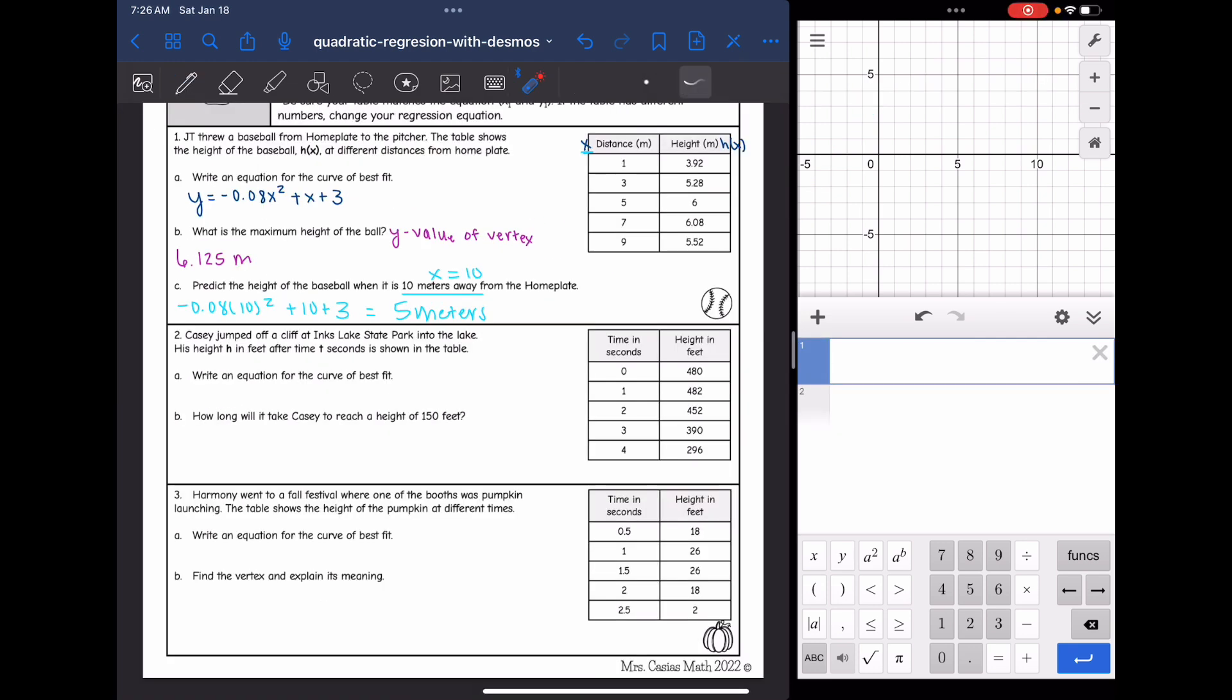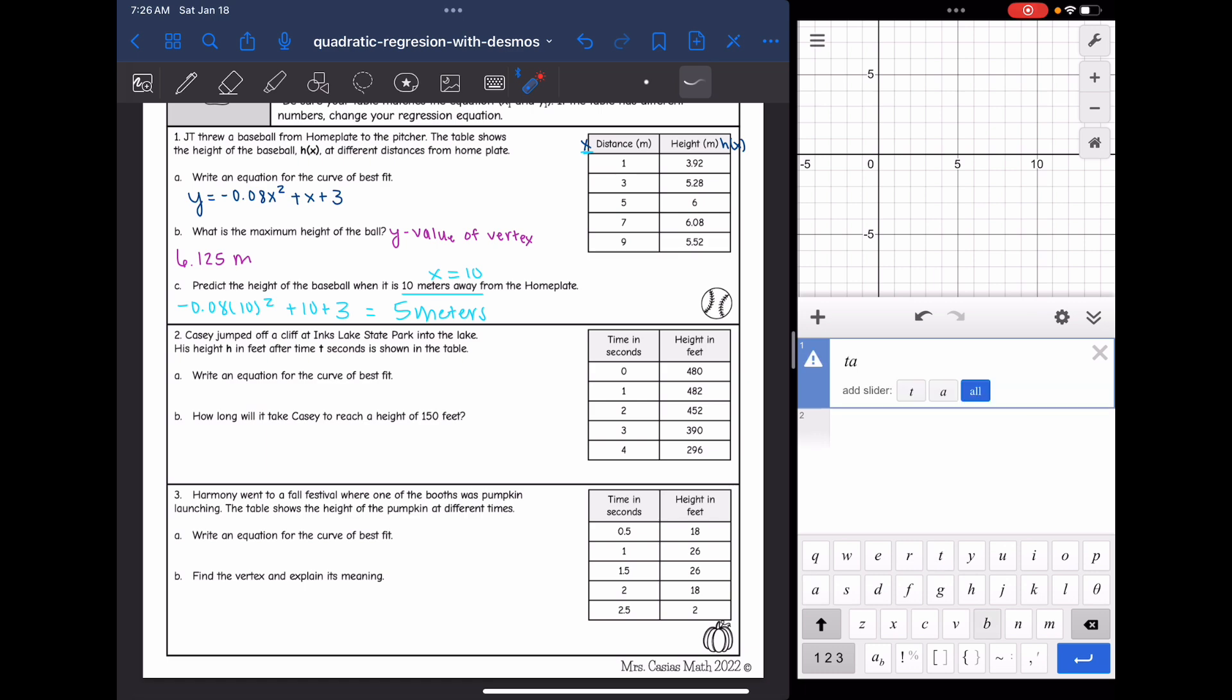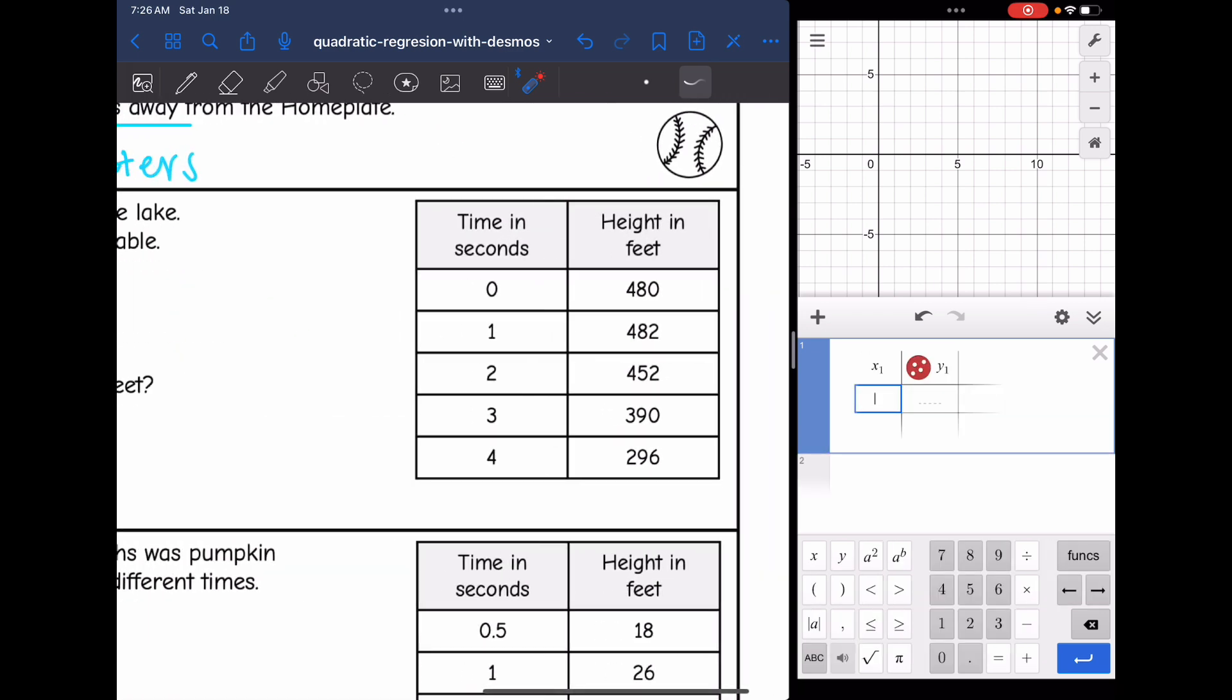Okay, let's look at the next one. It says Casey jumped off a cliff at Inks Lake State Park into the lake. His height h in feet after time t seconds is shown in the table. Write an equation for the curve of best fit. So first thing I need to do is input this data into a table in Desmos. So I typed in table and now I'm going to input the data.